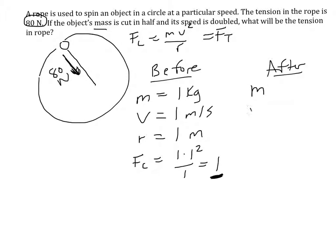So then we say after, what has changed? So m, v, and r. So the mass is half, so the mass is 0.5 now. Its speed is doubled, so the speed is 2. And it doesn't say anything about the rope, so the rope is the same, it's 1. So in that case, the centripetal force now, mv squared, so 0.5 times v squared, 2 squared over 1. 0.5 times 4 is 2, so I end up with a centripetal force of 2.